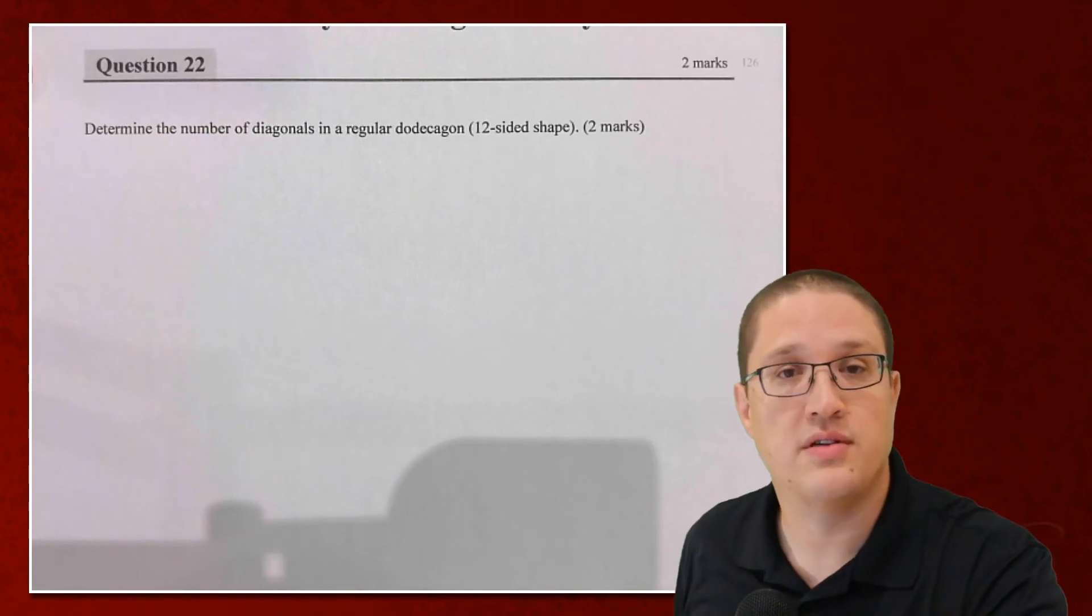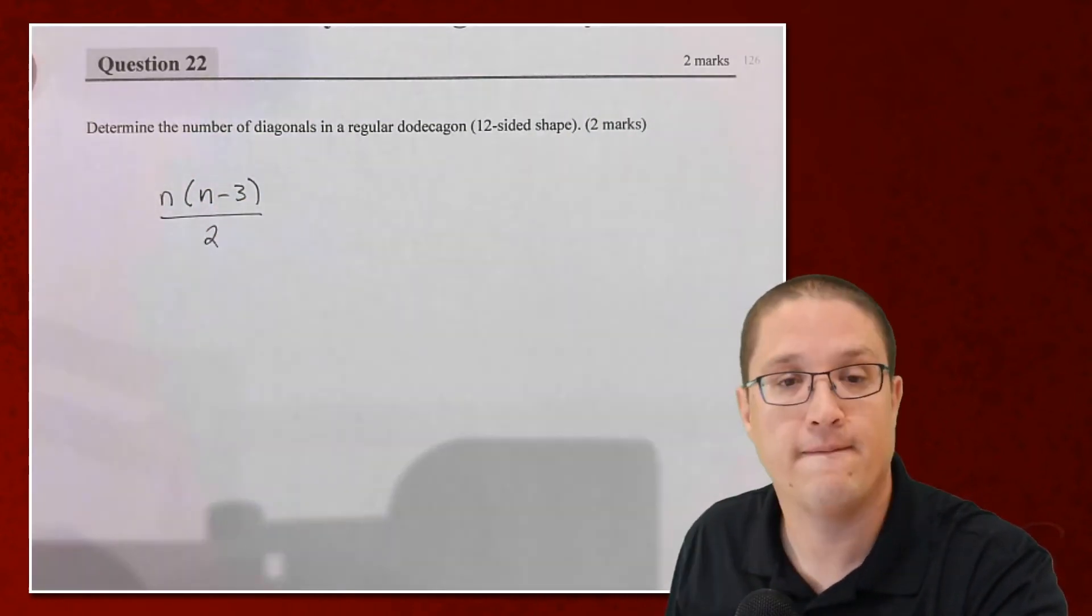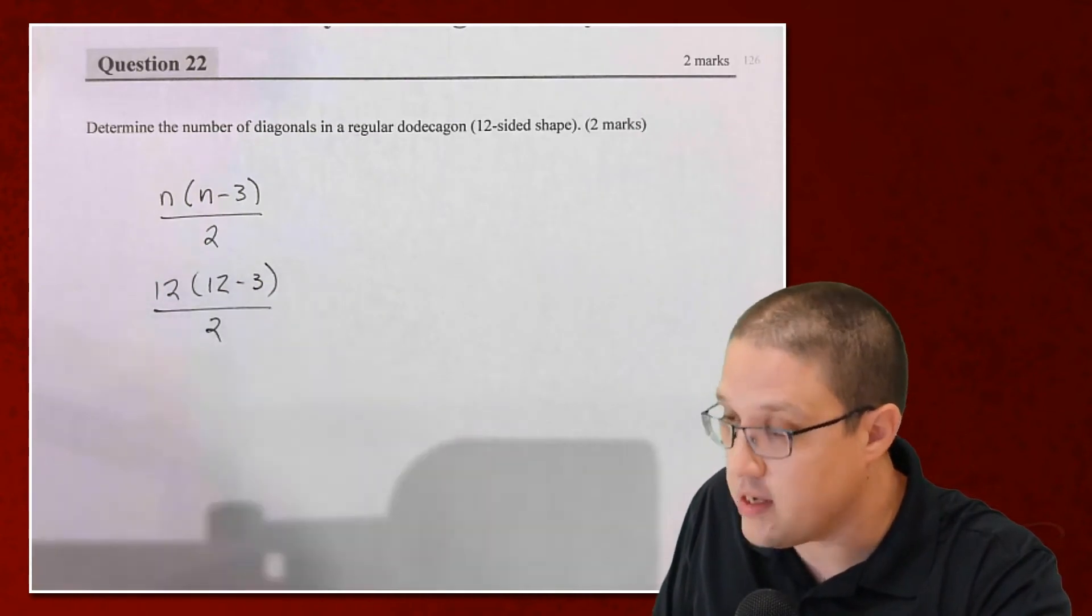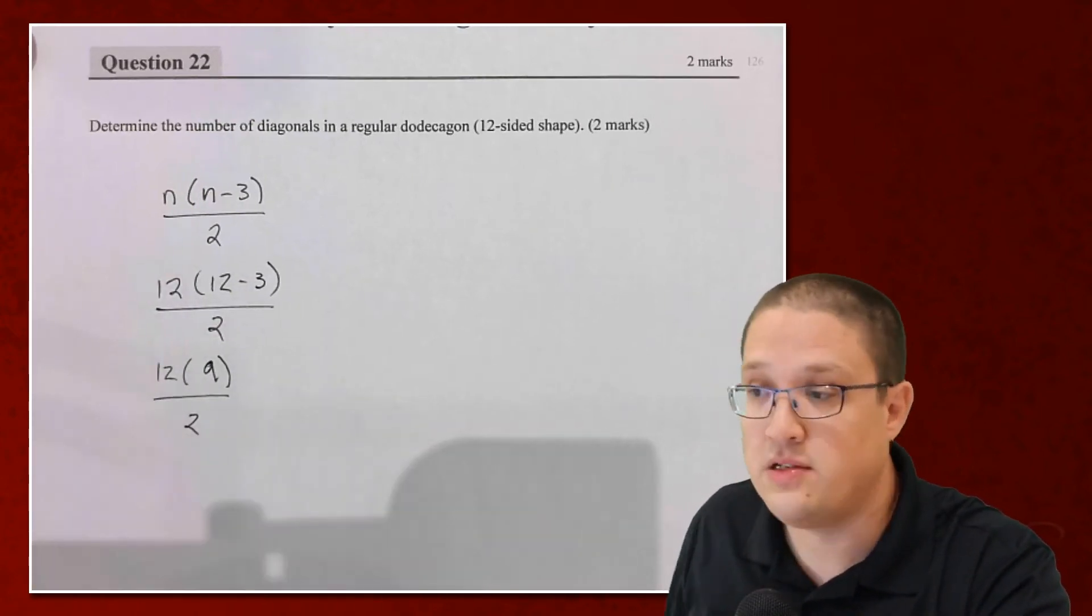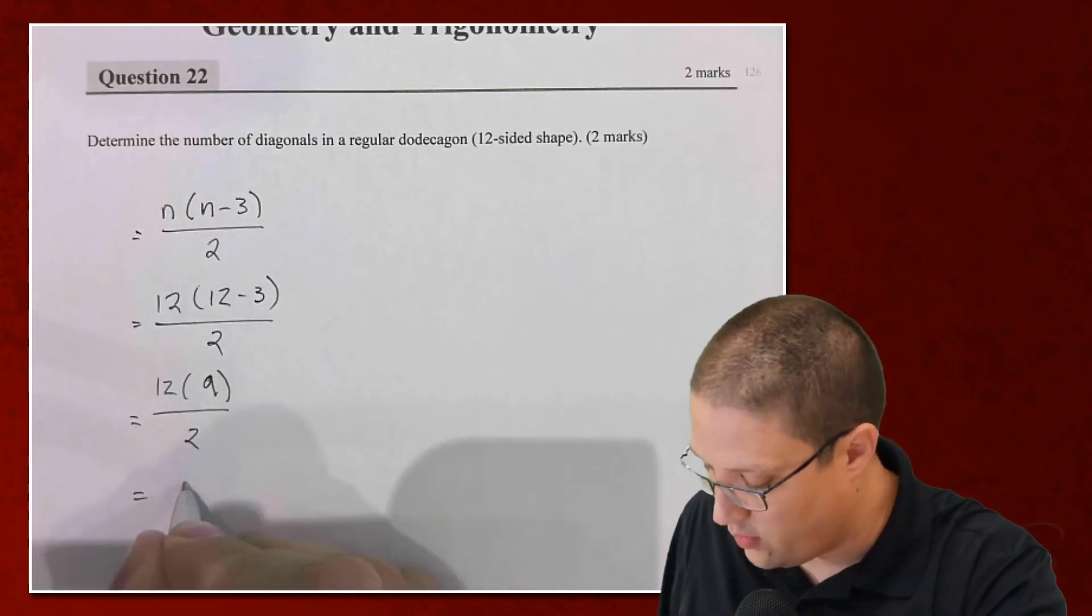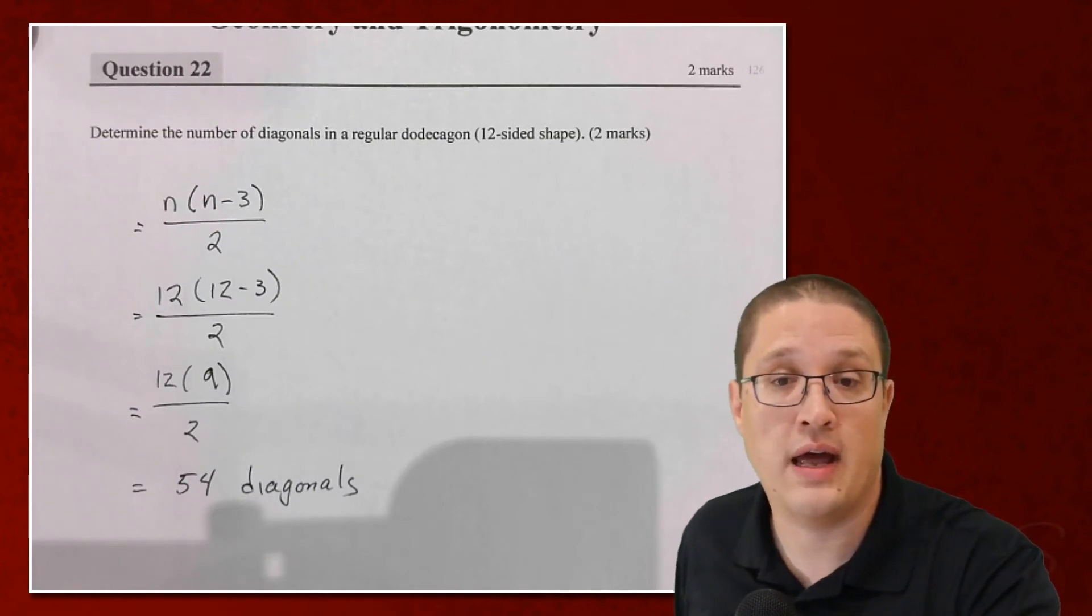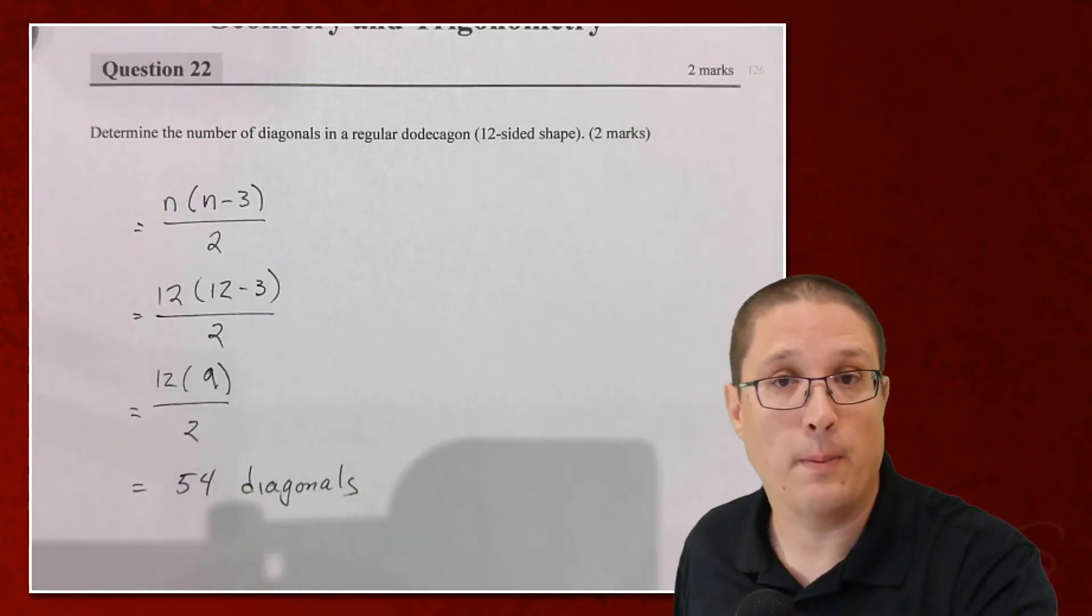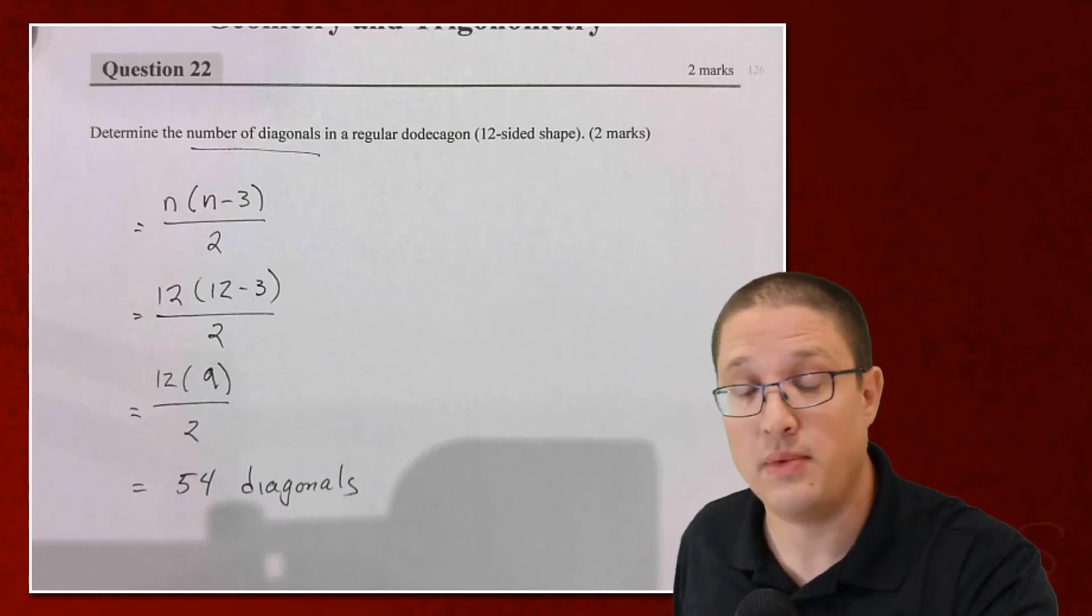So what I'm going to do is I'm going to use the formula instead. My formula is n times n minus 3 divided by 2. Plugging this in, I've got 12 times 12 minus 3 divided by 2. Make sure you're doing your BEDMAS correctly. So I'm going to do 12 times 12 minus 3 is 9 divided by 2. 12 times 9 divided by 2. It's going to work out to 54 diagonals. In this case, our regular dodecagon has 54 diagonals, and I don't want to draw all of them. So this formula works out really nicely for us.